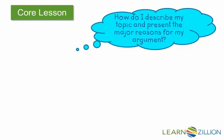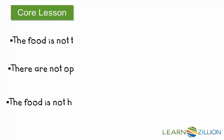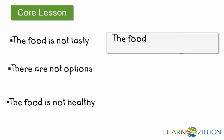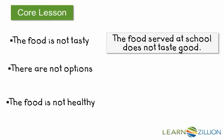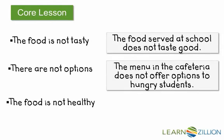Now, how do I describe my topic and present the major reasons for my argument? I'm going to do this by taking a look at my major reasons and start turning these into sentence form. The food is not tasty — I can turn that into: the food served at school does not taste good. There are not options — now: the menu in the cafeteria does not offer options to hungry students. More descriptive in that sentence.